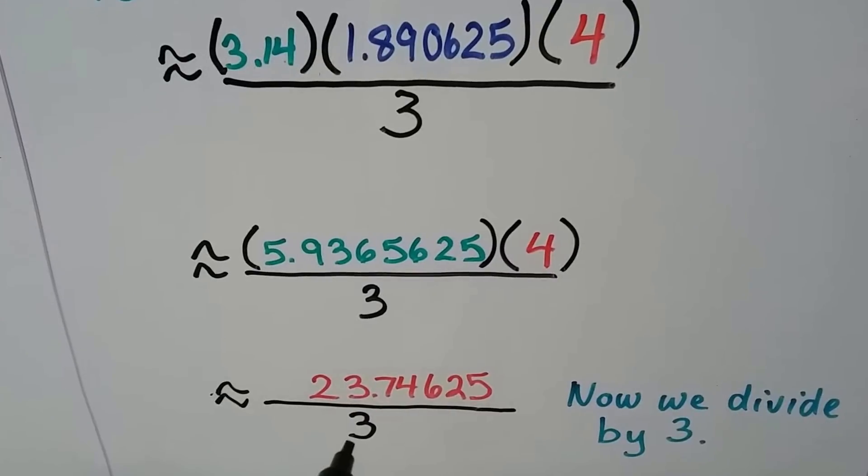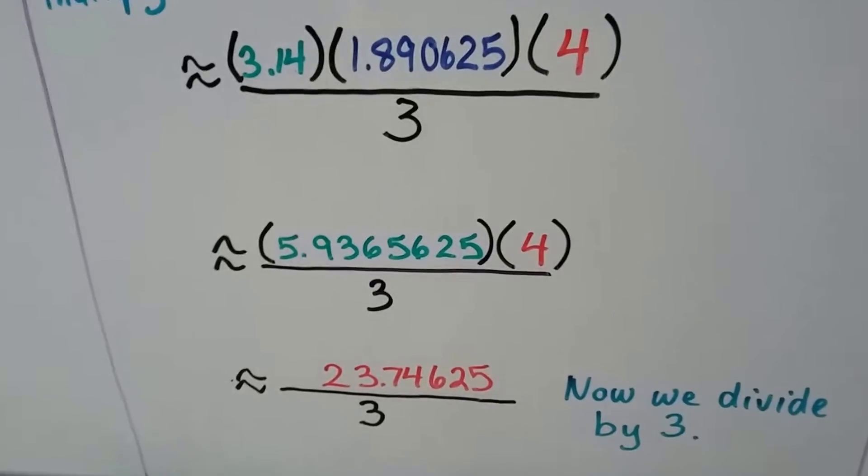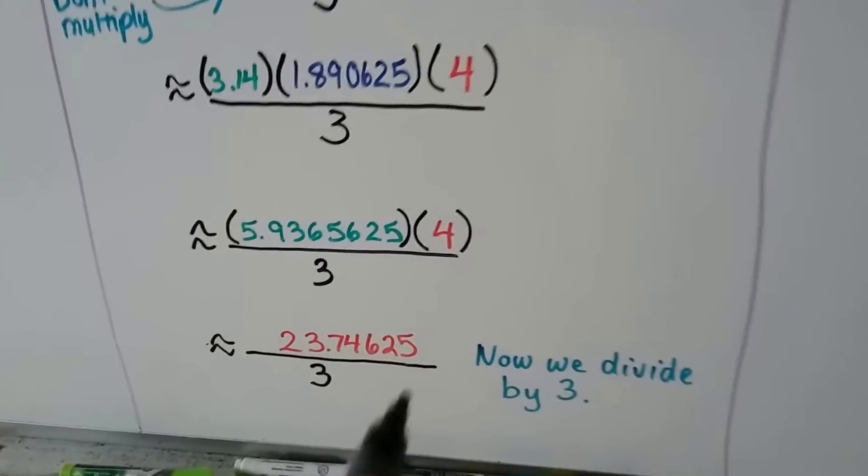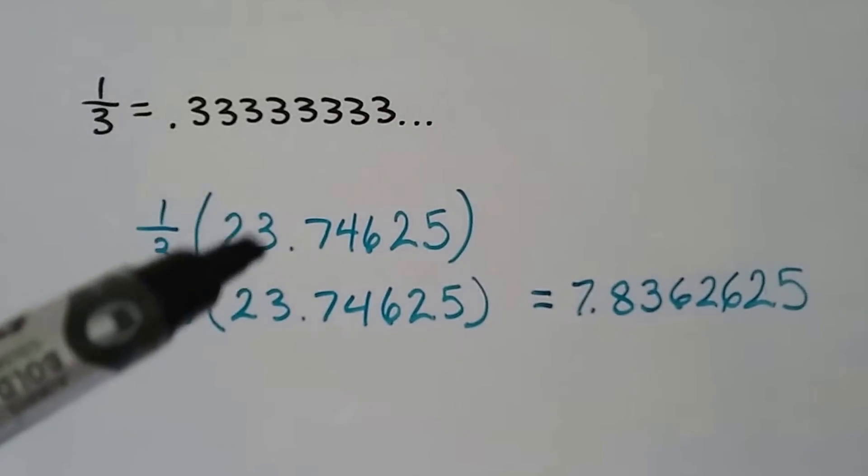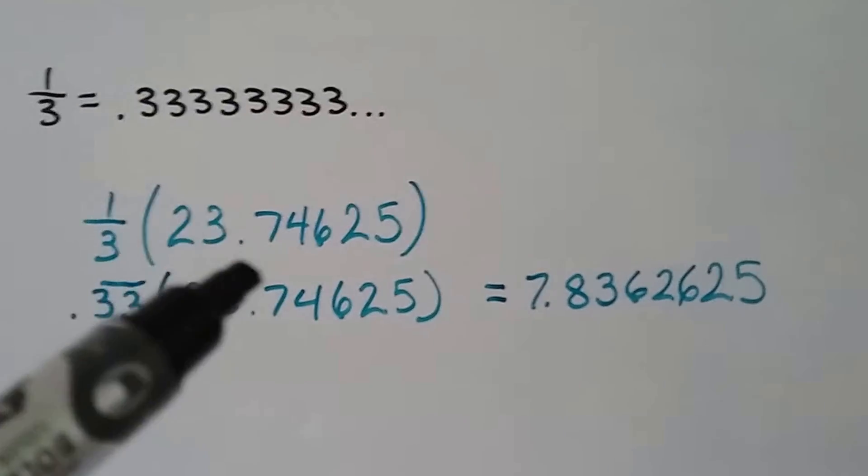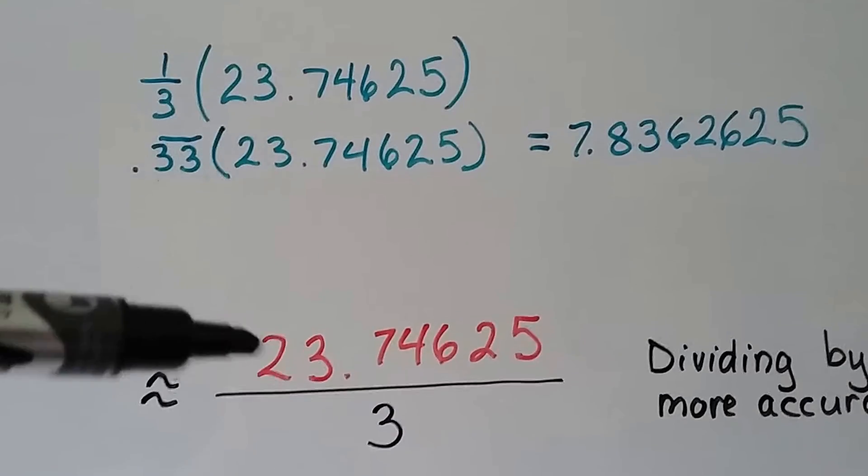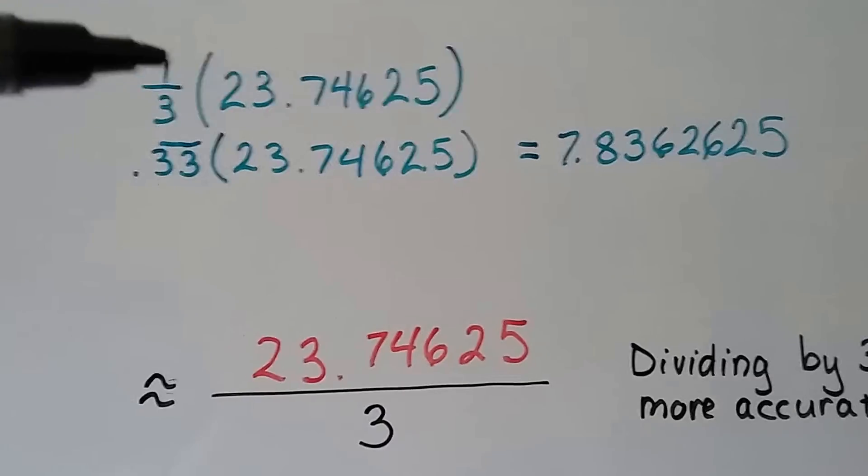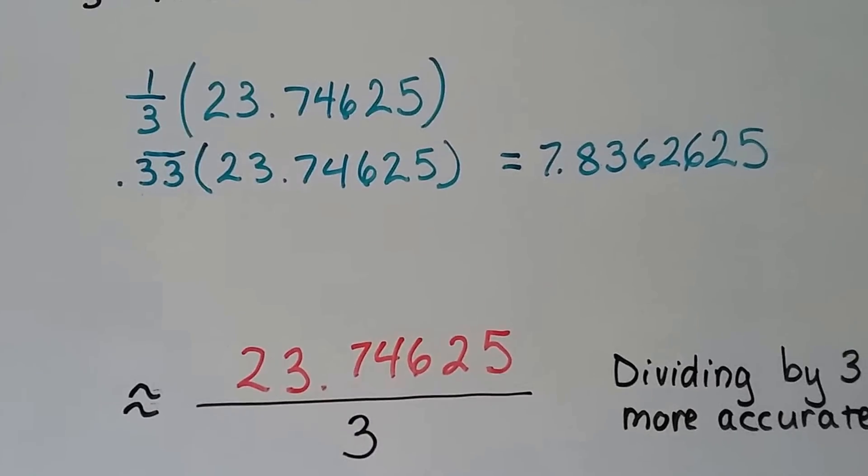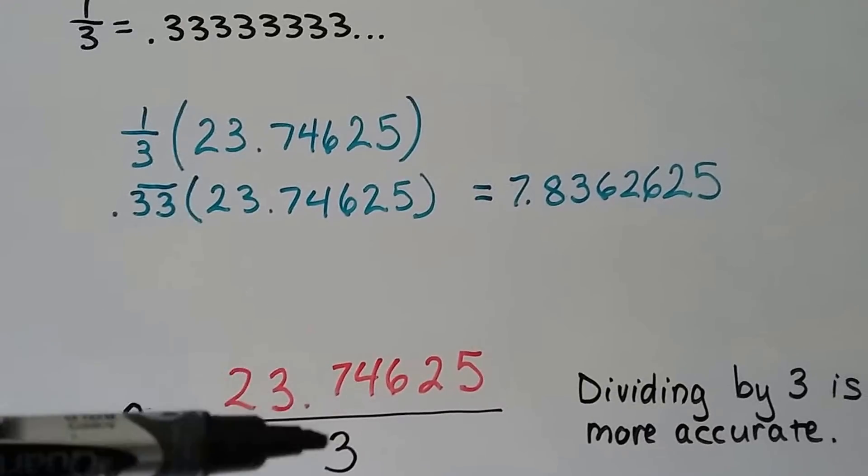Now we can divide it by 3, and it's still an approximation because of what pi did to us. If we had multiplied it by a third, we could have done 23.74625 over 1 and then multiplied straight across. We'd still be dividing this number. When we multiplied the fractions, we'd still end up with this. So multiplication and division are inverses of each other. We can just divide by 3.